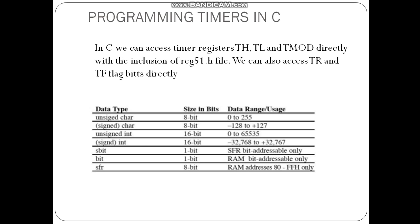The data types available in 8051 C are: unsigned char, signed char, unsigned int, signed int, sbit, bit, and SFR. The char type is 8 bits and int is 16 bits. Unsigned means we don't use a sign bit, so values range from 0 to 255. For signed representation, the first bit stores the sign, so values range from -128 to +127. Unsigned and signed int both take 16 bits. sbit is used for declaring just 1 bit. bit is used for the bit-addressable area. SFR (special function register) is used to hold 8-bit data.